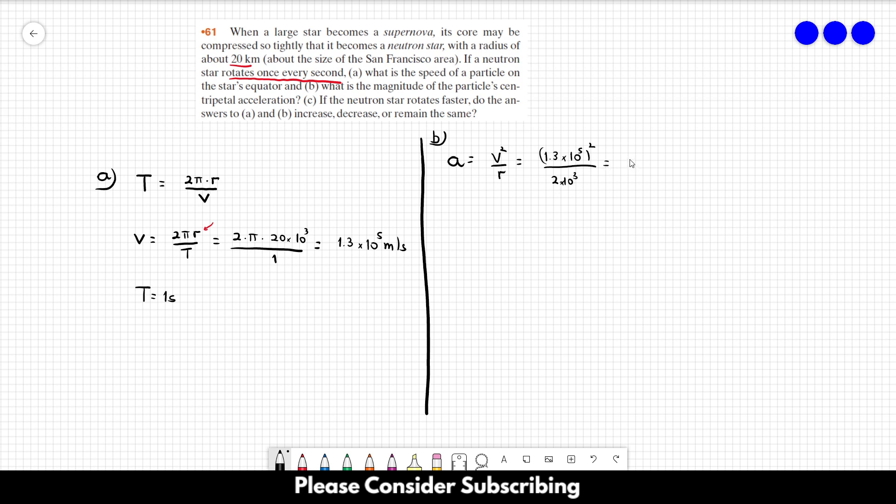So the centripetal acceleration is equal to 7.9 times 10 to the 5 meters per square second, roughly. So that's the answer of letter B.